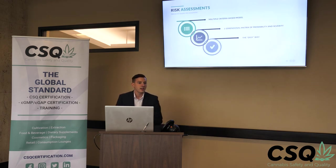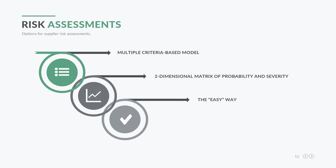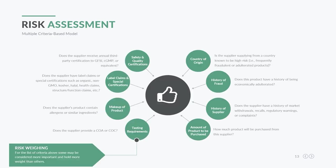There are three primary ways to do a risk assessment for suppliers: the multiple criteria-based model, the two-dimensional matrix of probability and severity, and the easy way. The multiple criteria-based model is probably the most difficult. We look at things like safety and quality certification — do they have a GFSI, cGMP, or CSQ certificate — and label claims and special certifications such as non-GMO, kosher, organic, or structure-function claims.